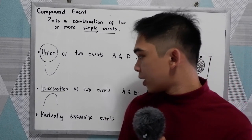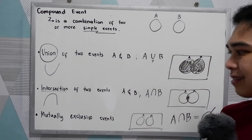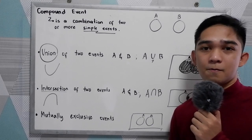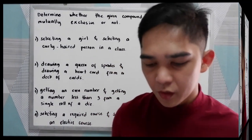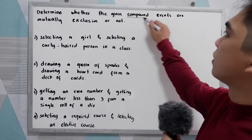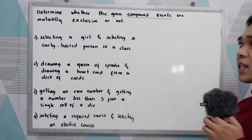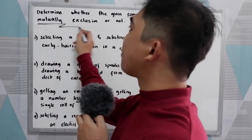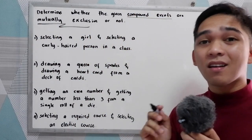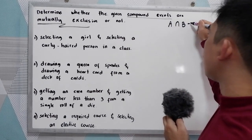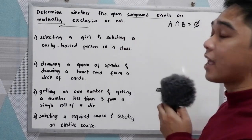Now let's have some problems and determine whether they are mutually exclusive events or not. When we say mutually exclusive, A and B cannot occur simultaneously, or simply, A intersection B is an empty set.